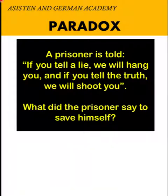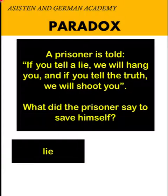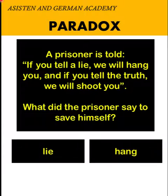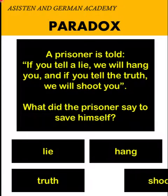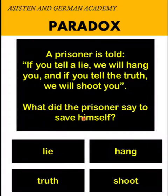Now let's solve this problem together. Let's begin by identifying the table of penalties. The penalty for lying is hanging, and the penalty for telling the truth is shooting. So whatever statement the prisoner says, whether it's true or false, surely he will be killed.